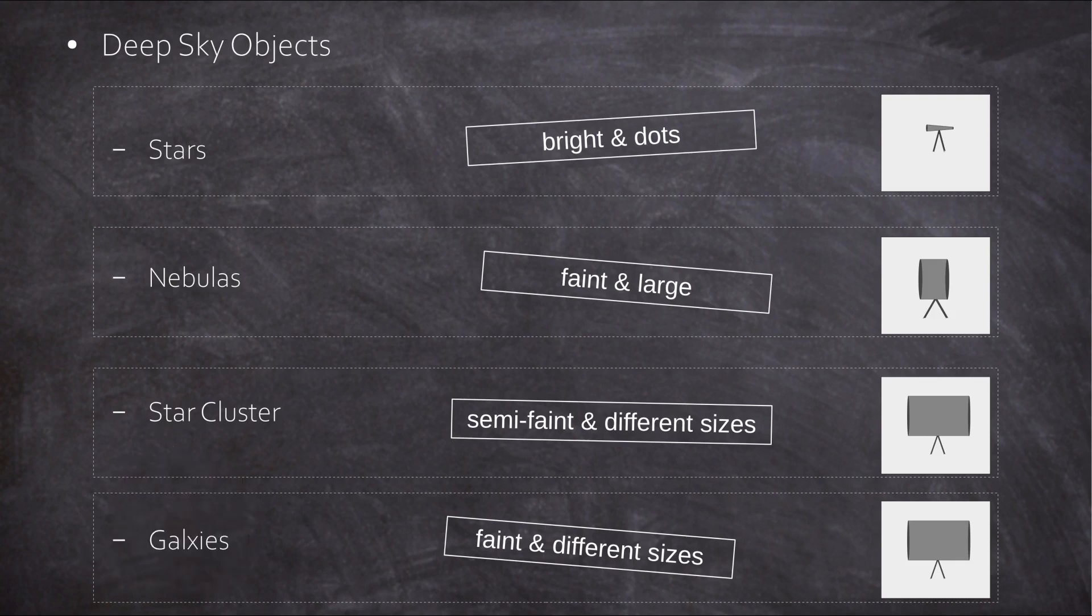So let's do a summary. For stars, or let's say star fields, you need a short scope.